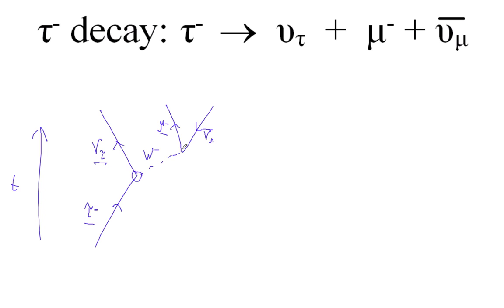Here we have negative charge going into this vertex, and negative charge going out here, and zero charge going out there, so the charge works at those vertices.